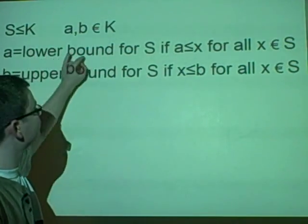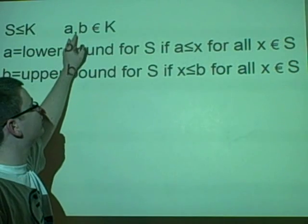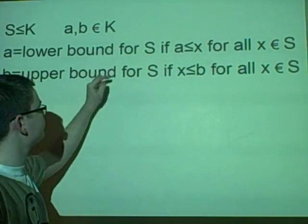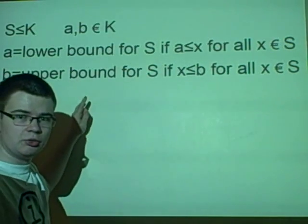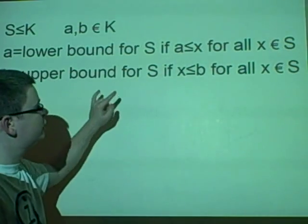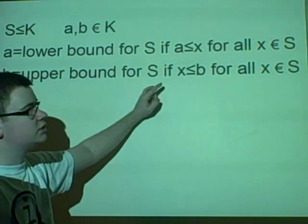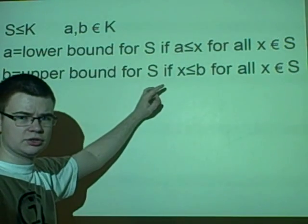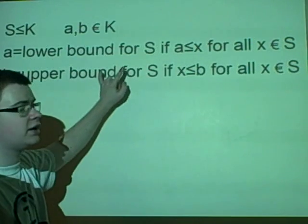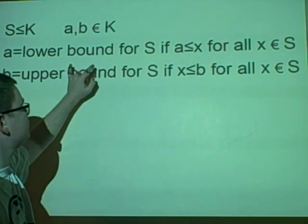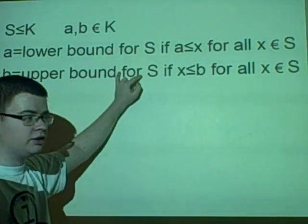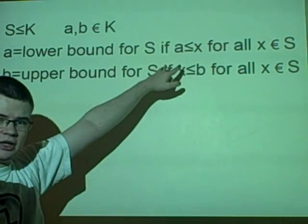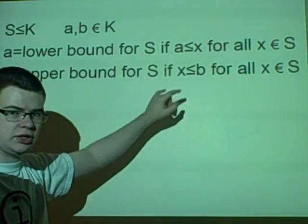S does not have to be equal to K. We have A and B as elements of K. A is known as a lower bound if it is less than or equal to all the values in S. A, or anything less than A, is known as a lower bound if it is less than or equal to all the values in S.